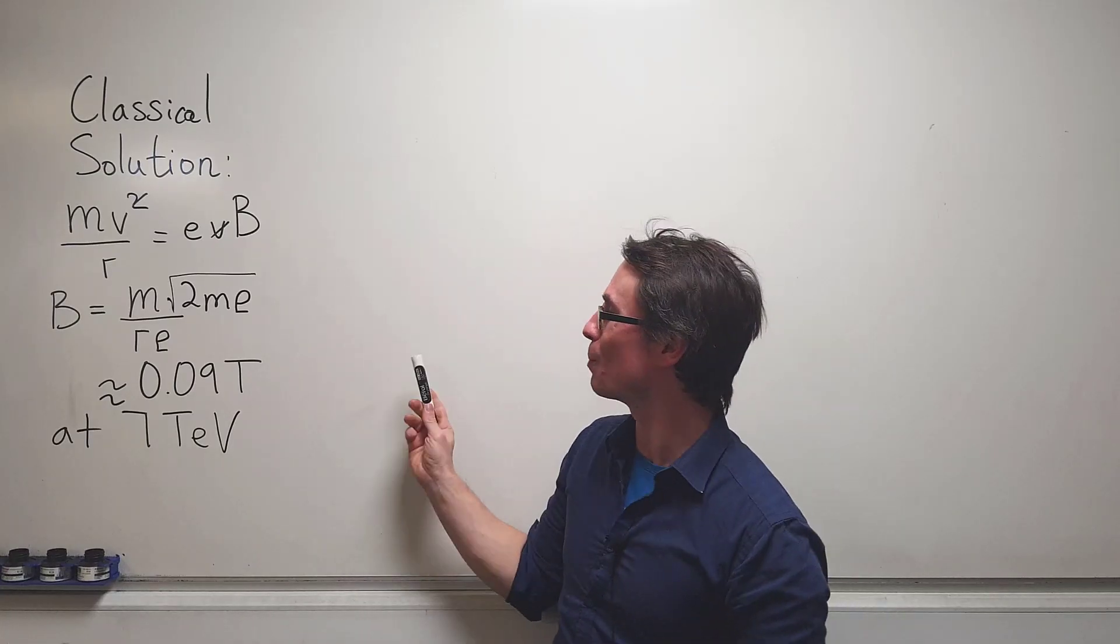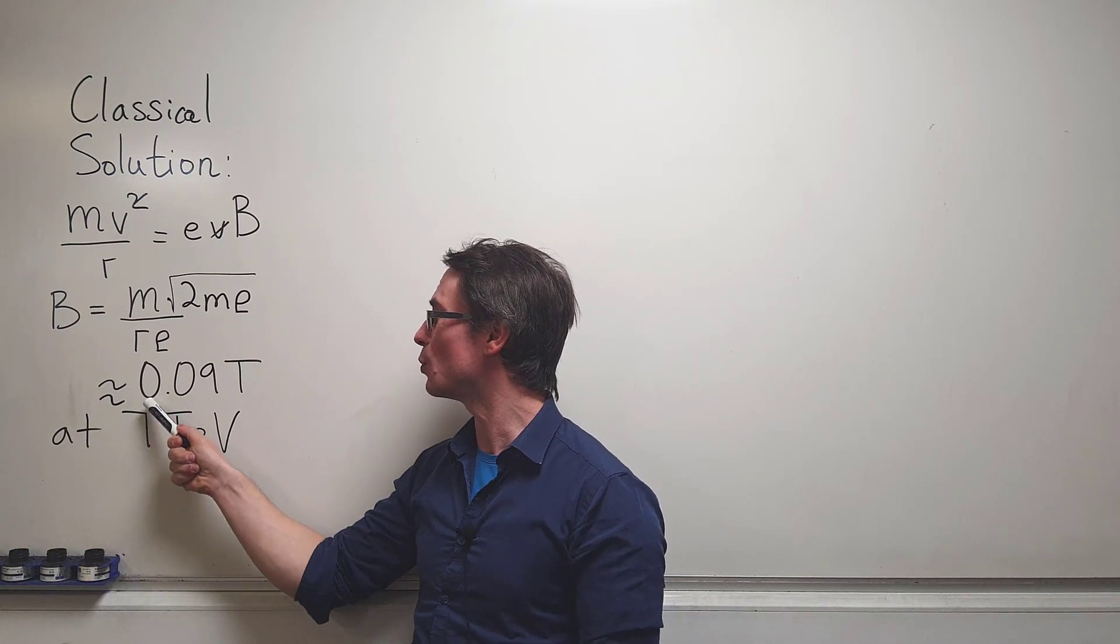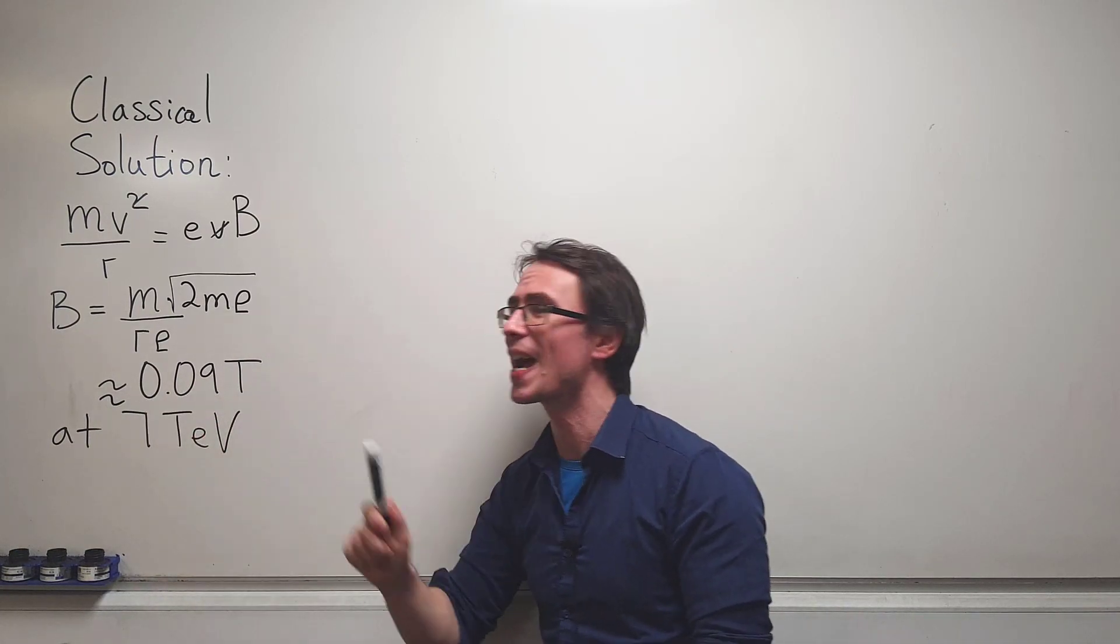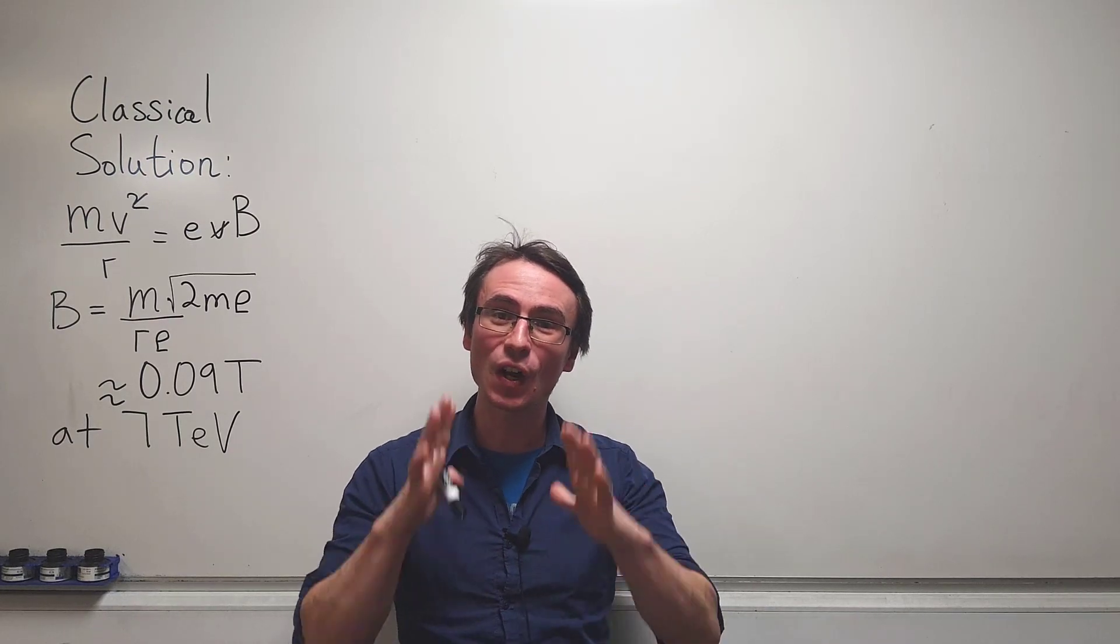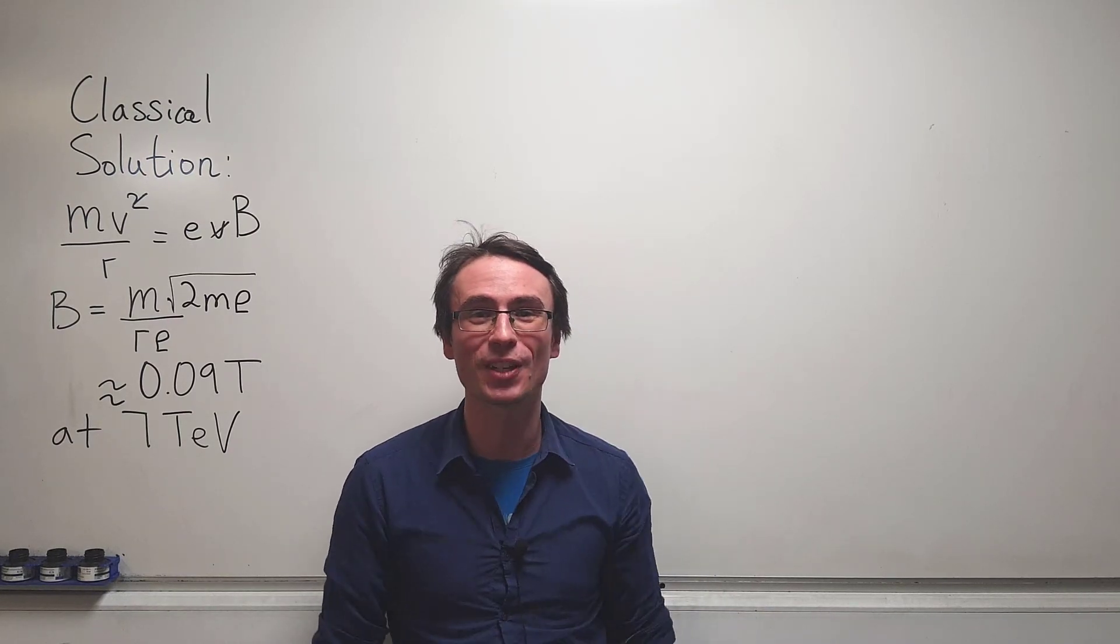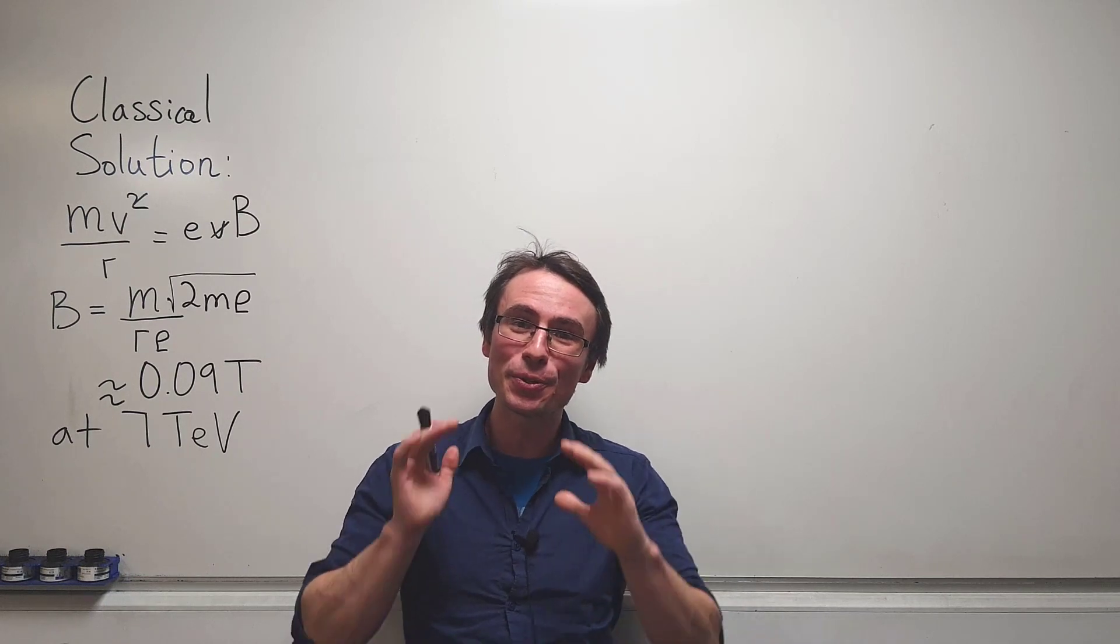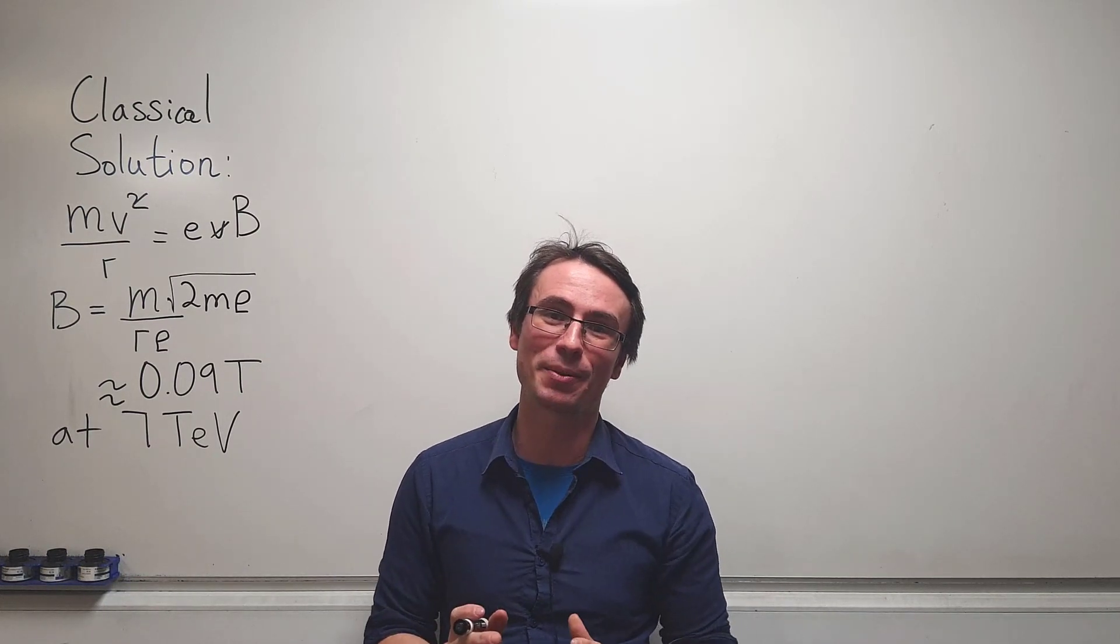First of all, the classical solution predicts a magnetic field of 0.09 Tesla. This is wrong. The protons in the Large Hadron Collider are orbiting very close to the speed of light, so we need to use Einstein's special theory of relativity.